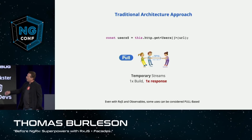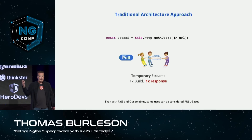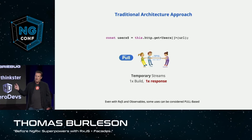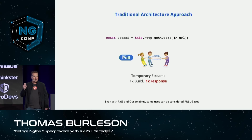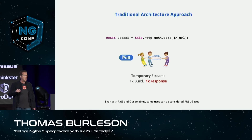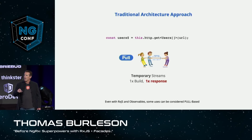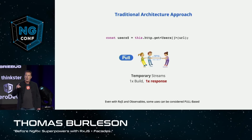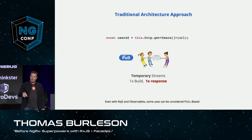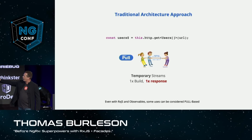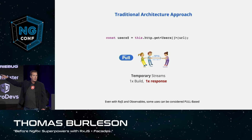Let's look at this more closely. Here's our HTTP service. We're making a pull-based call because the user dollar is a temporary stream — we make the call, we get the stream back, the stream is constructed one time, we get one response. So even with RxJS and observables, we're still implementing pull-based services and pull-based architectures.